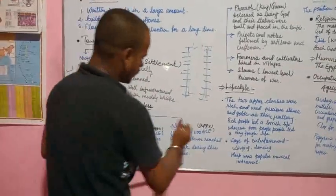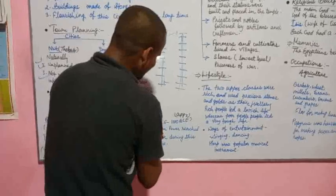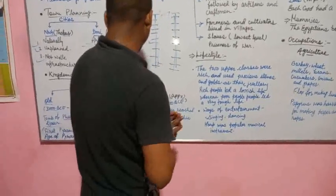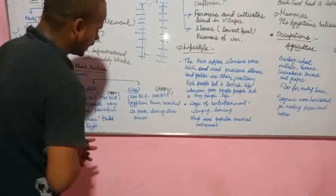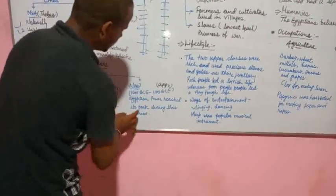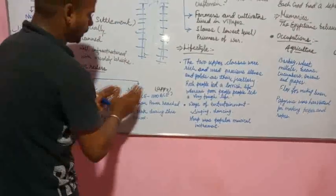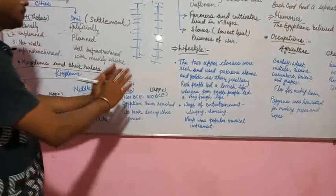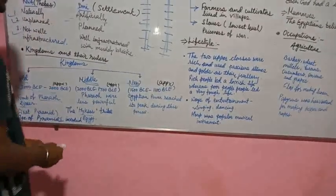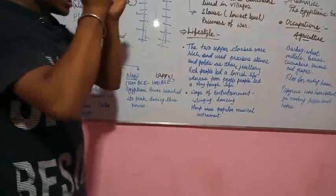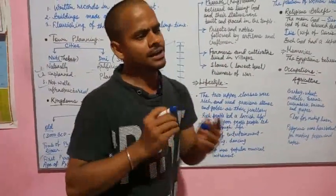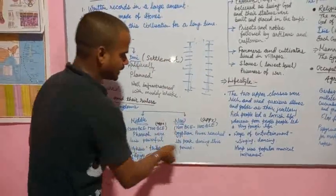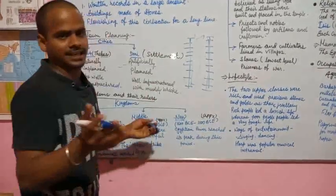New Kingdom, approximately 1600 BCE to 1100 BCE. Egyptians were again powerful and they reached their peak during this period. Egyptian civilization reached a very high level in their powers and development.